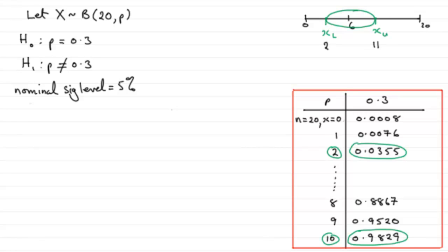So in order to do this, let's say that the actual significance level is going to equal the probability of X being less than or equal to 2,